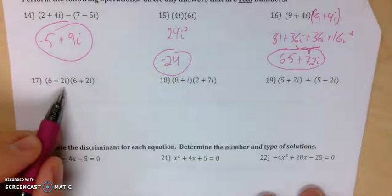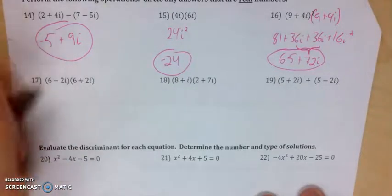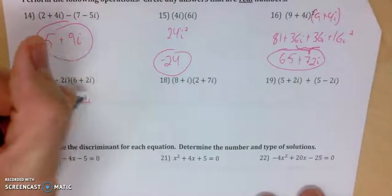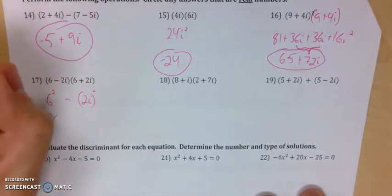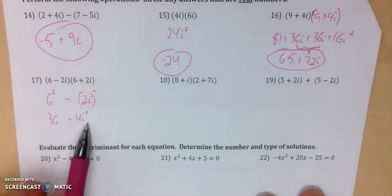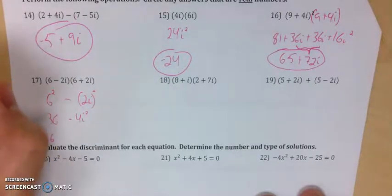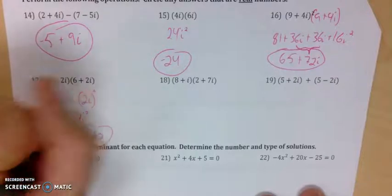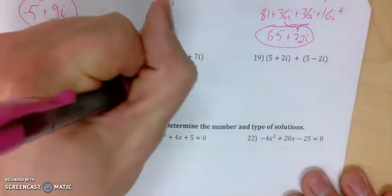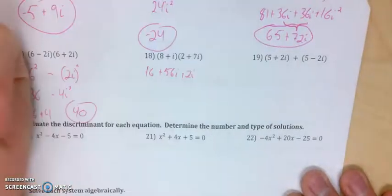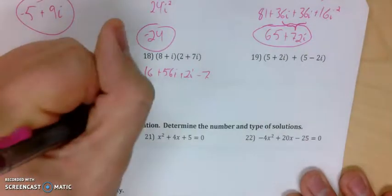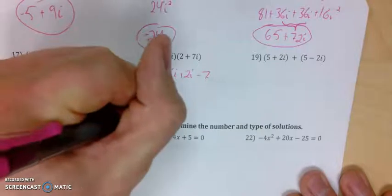For number 17, we've got conjugate pairs — anytime it's the same thing with one plus and one minus, the middle term cancels. I have the square of the first, 6 squared, minus 2i squared — that's 36 minus 4i squared. Since i squared is negative 1, this is really 36 plus 4, which is 40. Number 18: distributing gives 16 plus 56i plus 2i plus 7i squared, which is minus 7. Combining like terms gives 9 plus 58i.